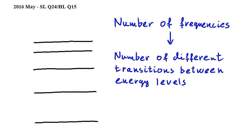I have drawn a sketch of the five energy levels and I also wrote down that essentially the number of different frequencies corresponds to the number of different transitions that are possible between the energy levels in the atom.